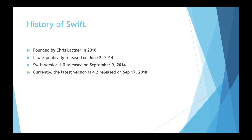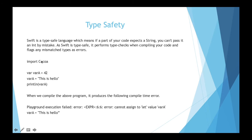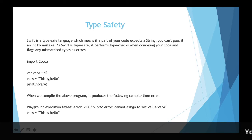Now let's look at type safety. Here, 'import Cocoa' — I declare 'var a = 42', an integer value, but then I try to assign 'var a = "this is hello"'. When we compile this code it produces a compile-time error: 'cannot assign to let value, var a'. Since we already declared 'a' as integer type, we cannot assign a string value. This is the type safety feature of Swift.